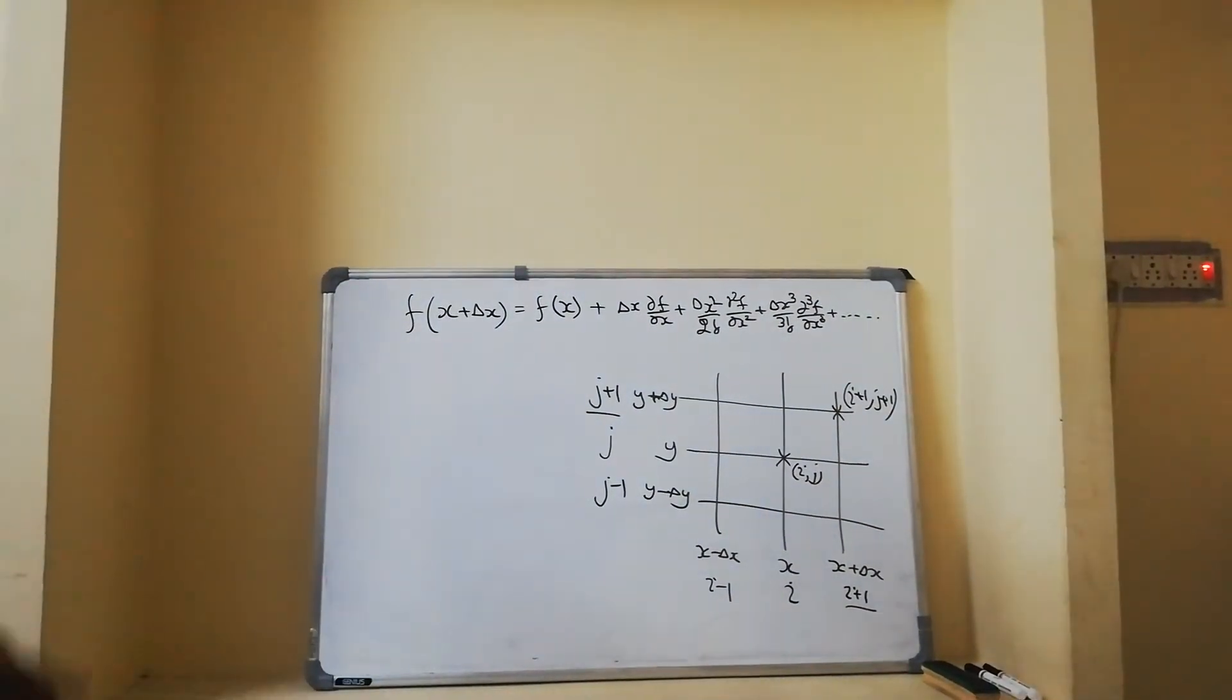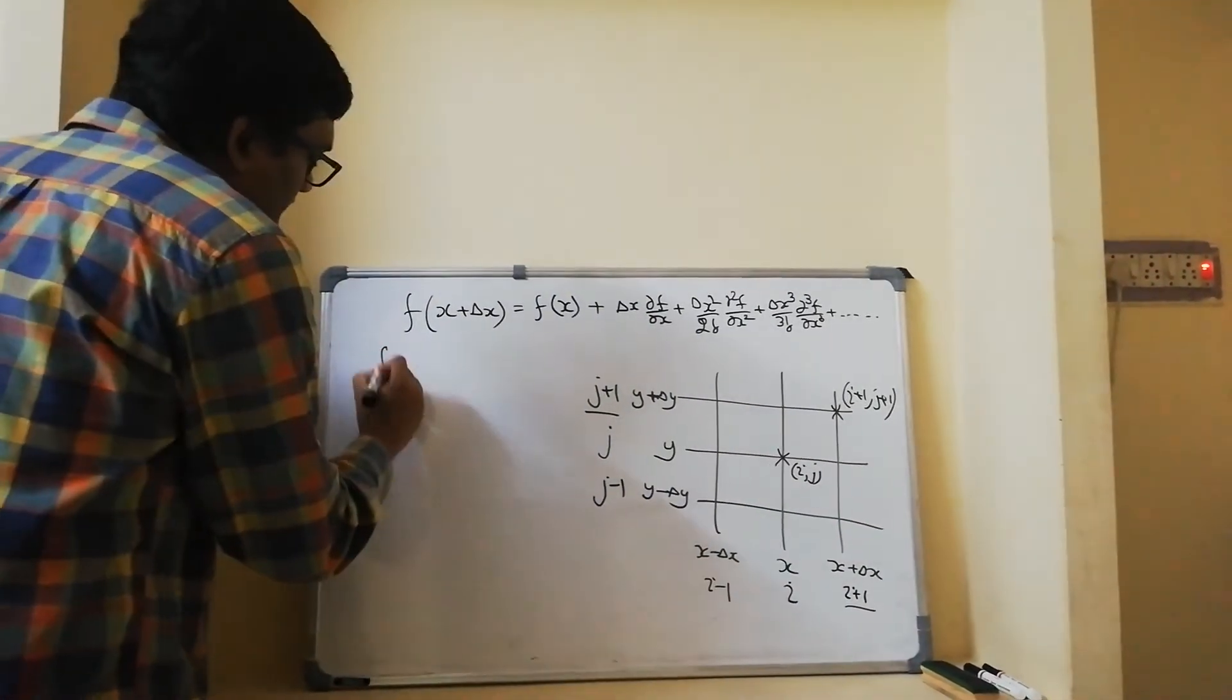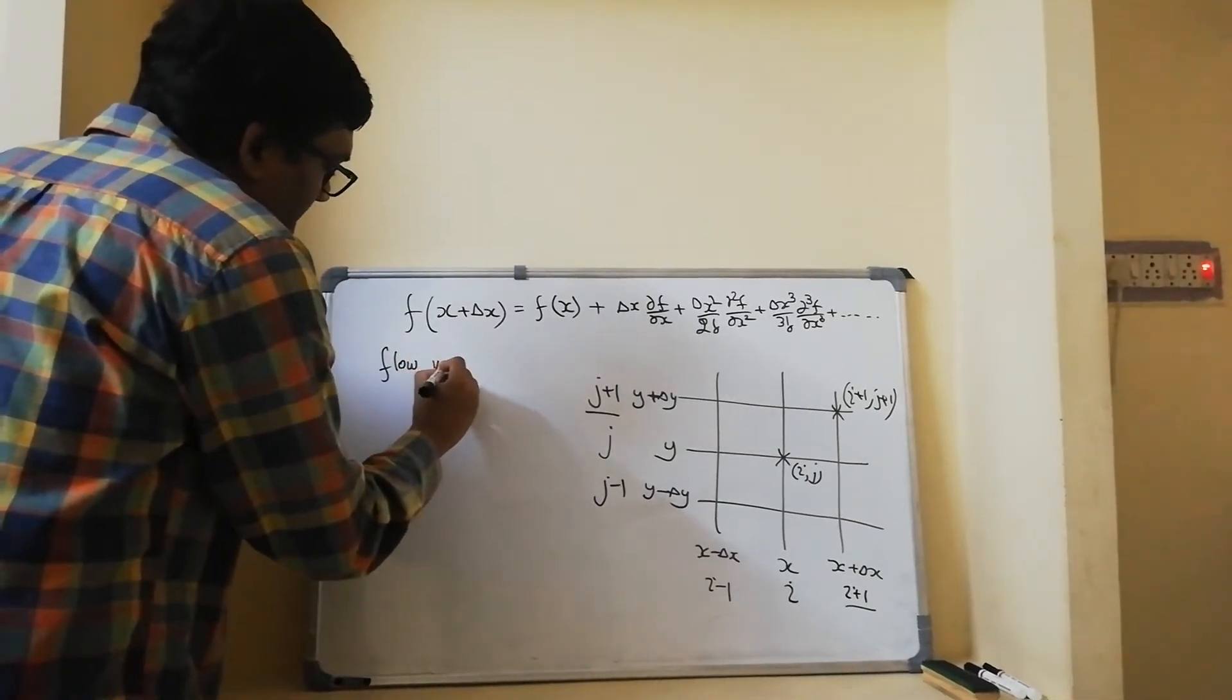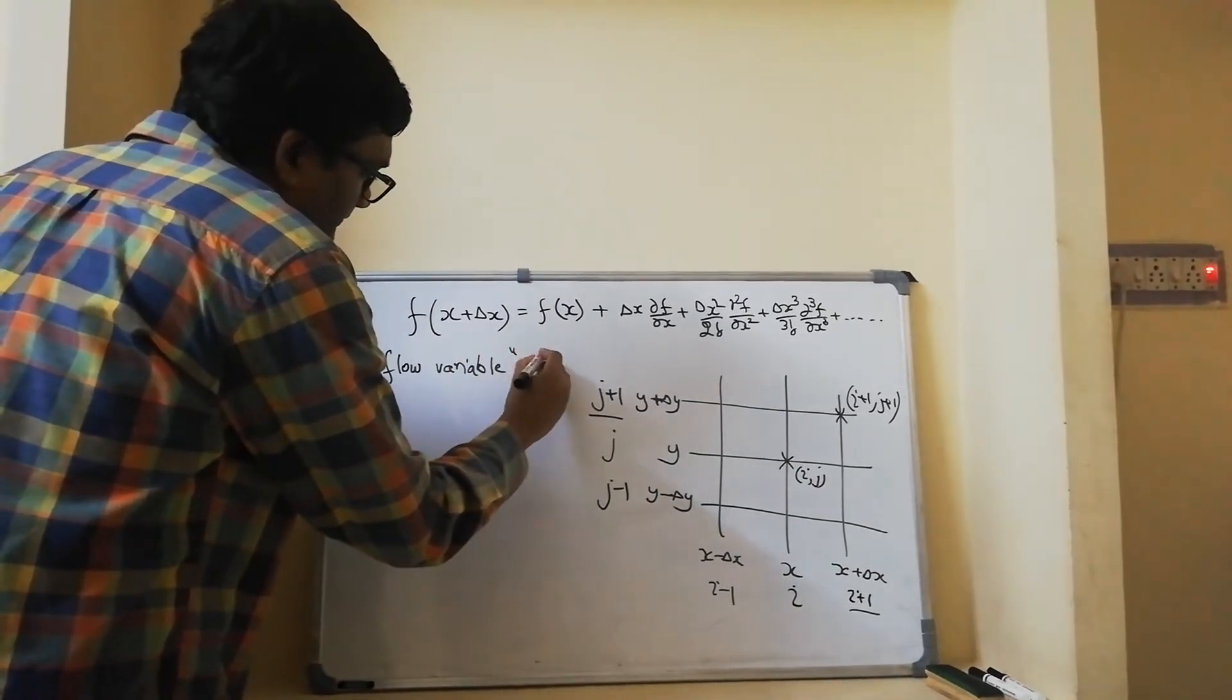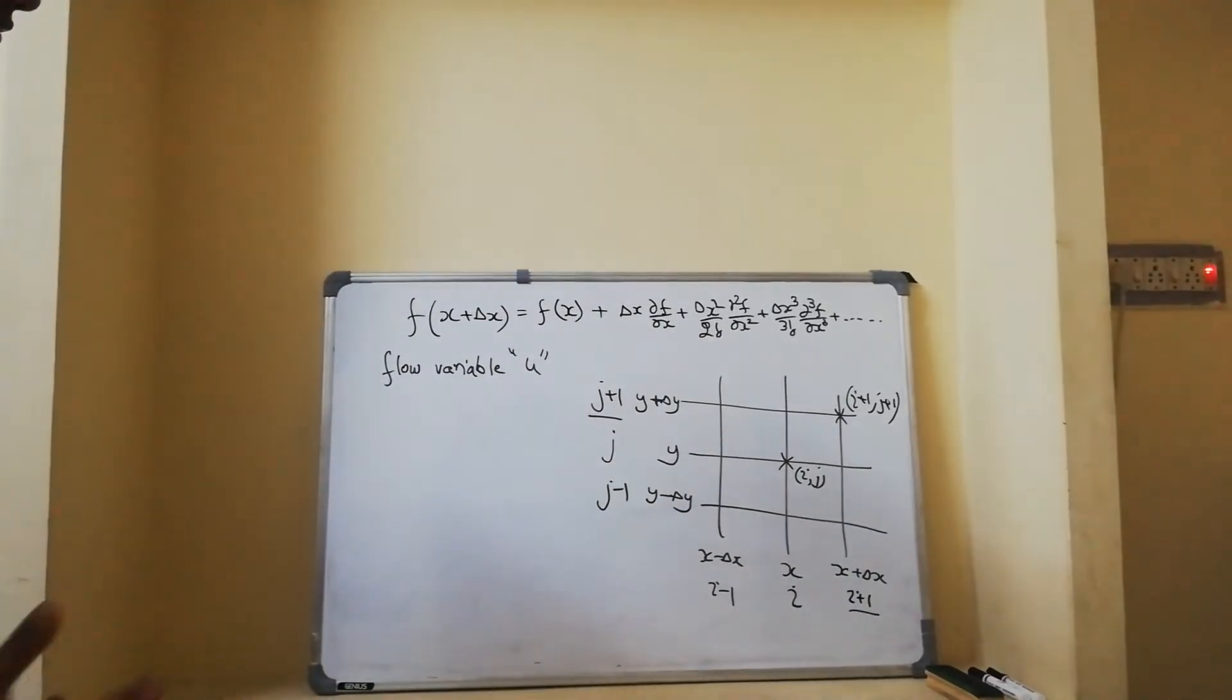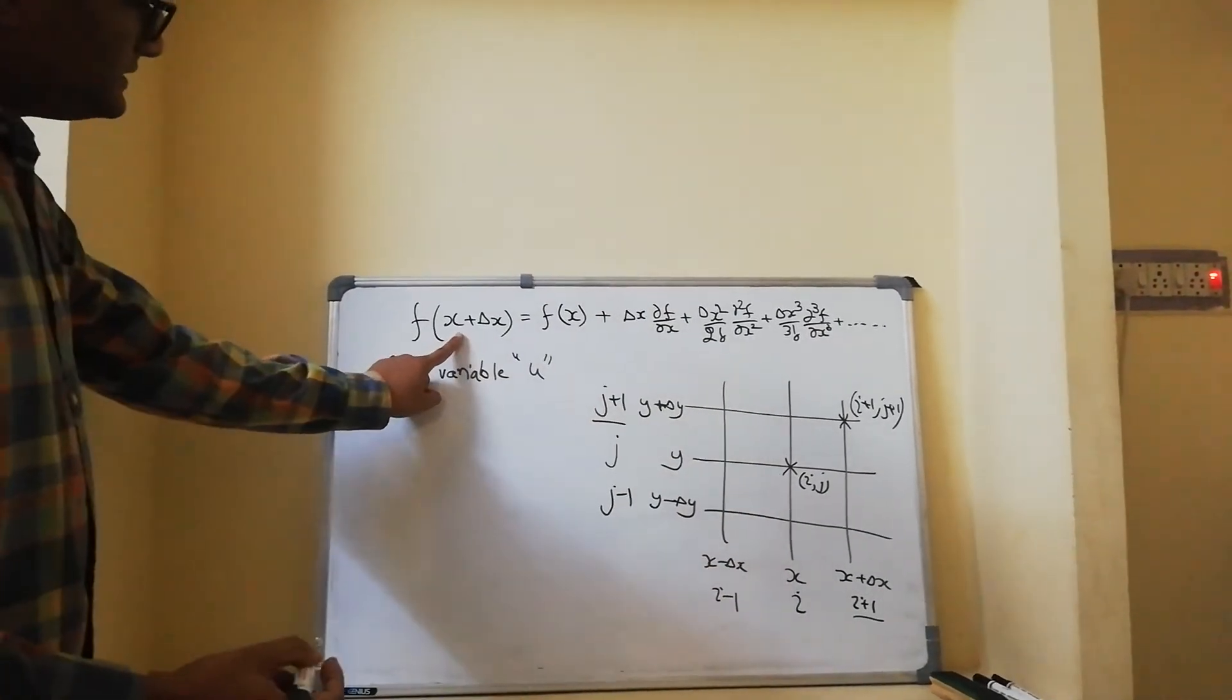Let's say I want to write this infinite Taylor series for a flow variable u. U could be any flow variable, not only velocity. I can write this in index form.